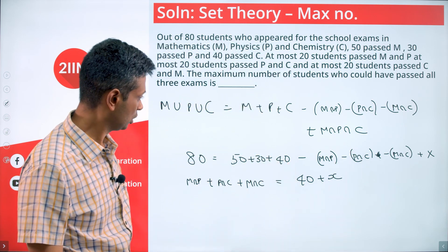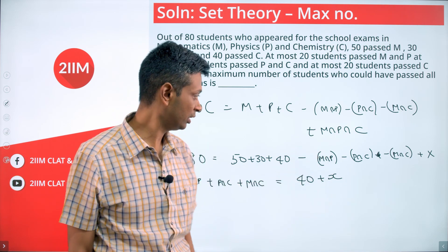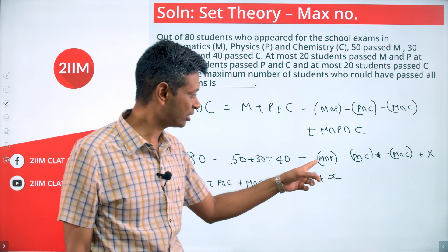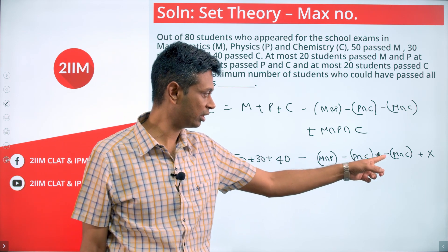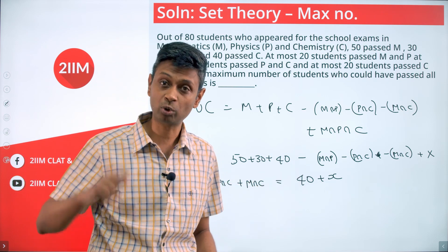We want x to be as high as possible—that's our objective. We've manipulated this and taken all the numbers away. M intersection P, M intersection C, M intersection P intersection C—all three come to this side, we have it as 40 plus x. We want x as high as possible.